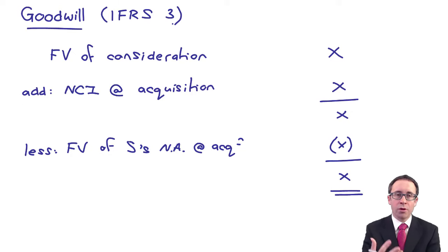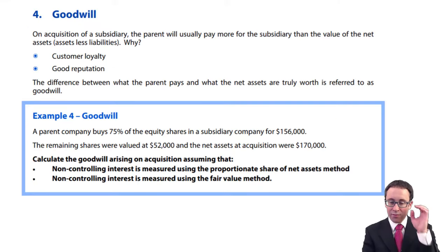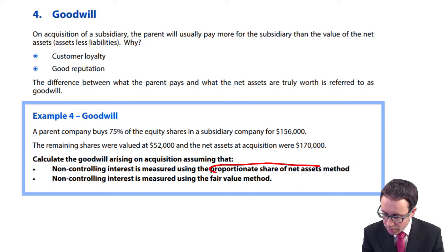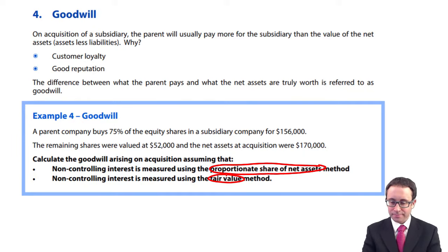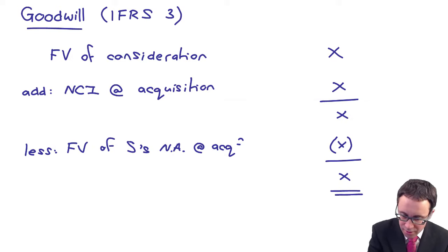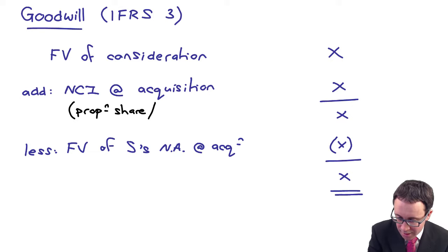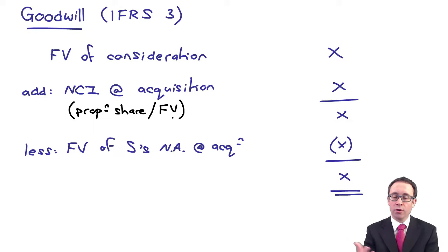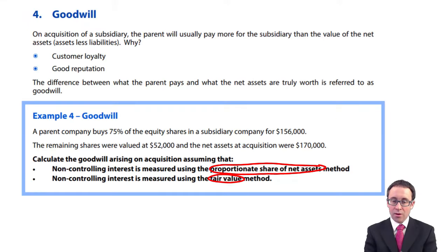We need to put some numbers into the proforma — the best way to do that is to look at an example that asks us to calculate goodwill based upon two methods: first, the proportionate share method, and second, the fair value method. These two methods relate to how we measure the non-controlling interest at acquisition. The NCI at acquisition is either based upon the proportionate share of net assets method or the fair value method.